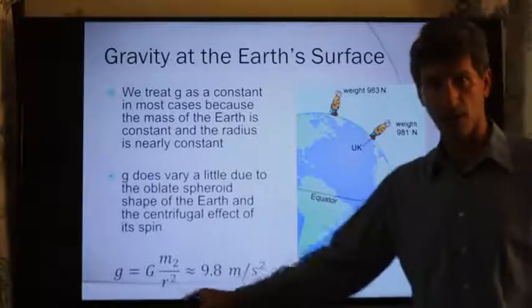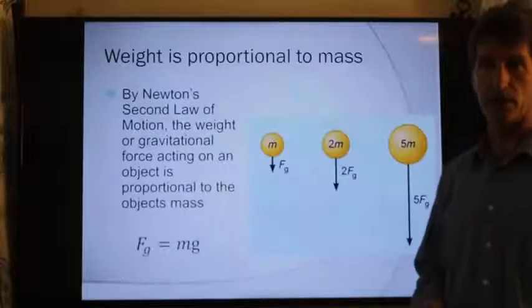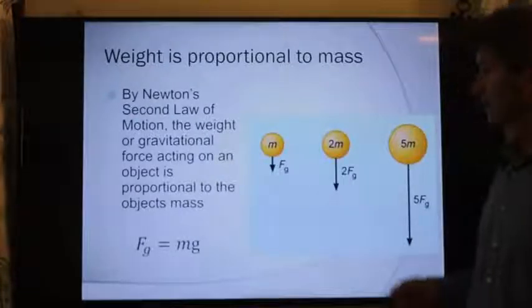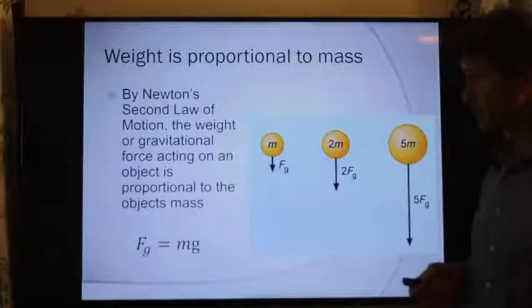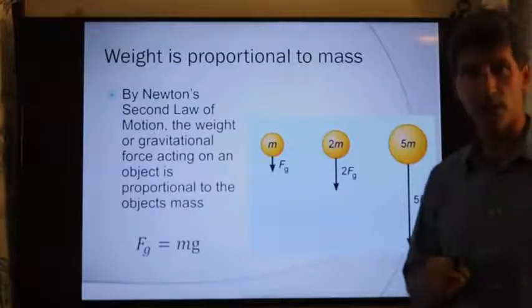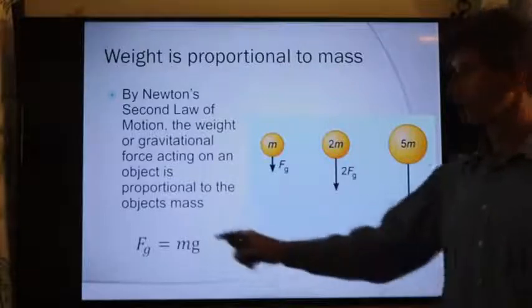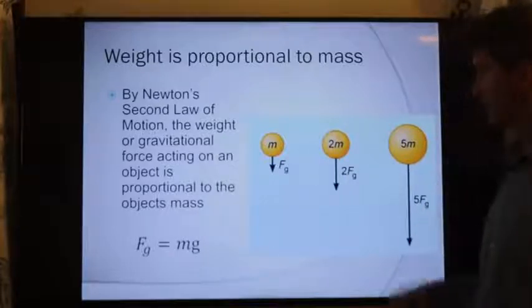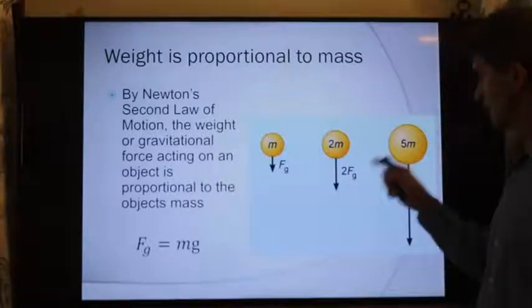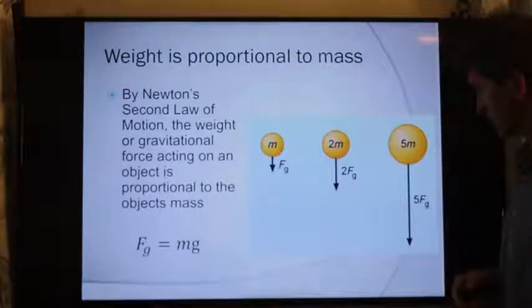But again, using 9.8, even though the radius does vary a little bit, and there are some other effects, that's pretty effective in calculating the weight. Again, weight is proportional to mass. Generally, if we're just treating objects near the surface of the Earth, the only thing that will affect the object's weight in our calculations will be the mass of the object in question. Double the mass, you're doubling the weight. Quintuple the mass, and you're talking about five times as much weight.